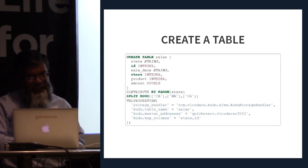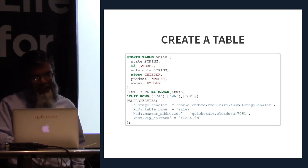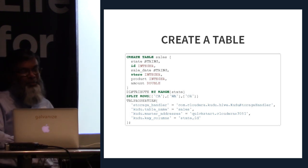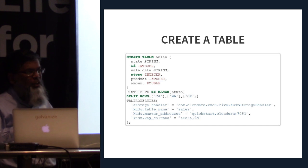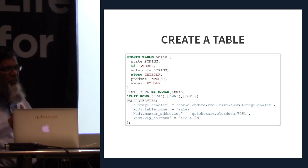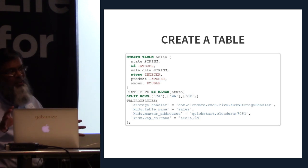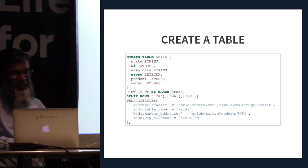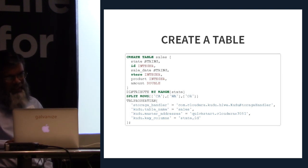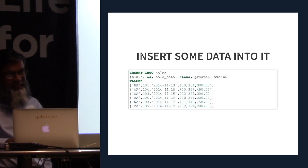After SSHing into the Quickstart machine with username and password 'demo', you start Impala shell. Then you create a table — in this example with columns: state ID, sale date, store, product, and amount. This demonstrates range partitioning instead of hash partitioning. It creates four tablets with three split points — everything before California, up to California, between California and Oregon, and between Oregon and Washington. Then you can insert data and run regular SQL.